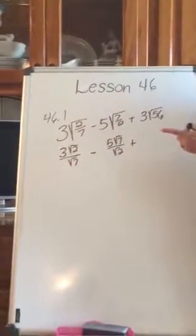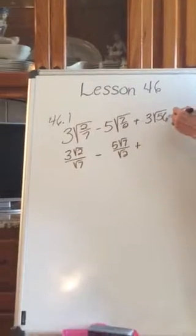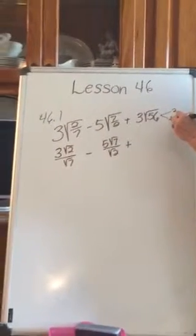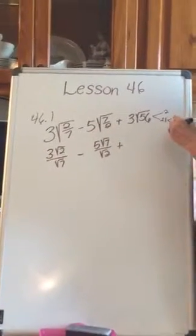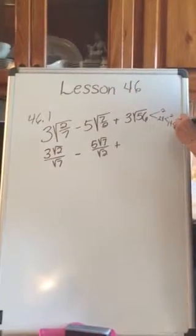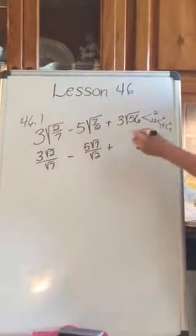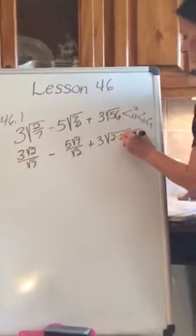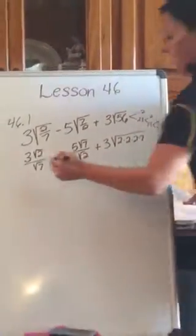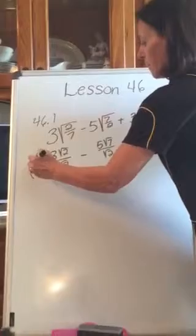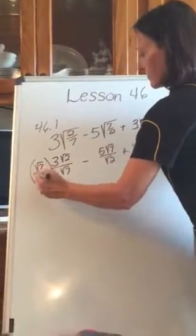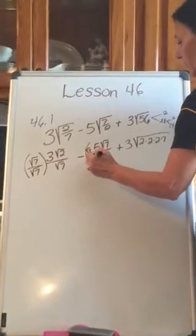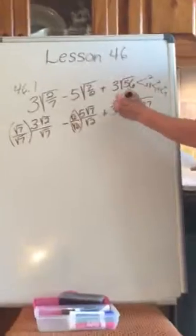Now let's look at factors of 56. Factors of 56: 28 is 2 times 14, and that's 2 times 7. So we can say this is really 3 times 2 times 2 times 2 times 7. Now I eliminate the radical in the denominator by multiplying by it over itself — square root of 7 over square root of 7, and square root of 2 over square root of 2. Here I can pull a 2 out.